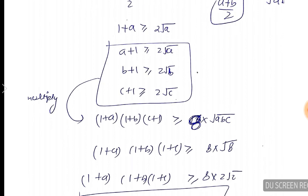If you multiply the LHS, then you must multiply the RHS also. 2×2×2 is 8 and √ABC. Any doubt till here?